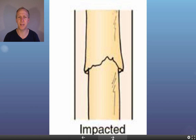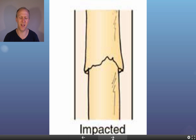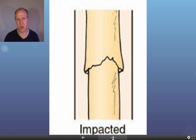An impacted fracture is a lot harder to get, but it means someone has essentially squashed the bone and one end has gone inside the other. It doesn't happen very often, but when it does it requires someone to pull the bone out and line it up again, and can require surgery.